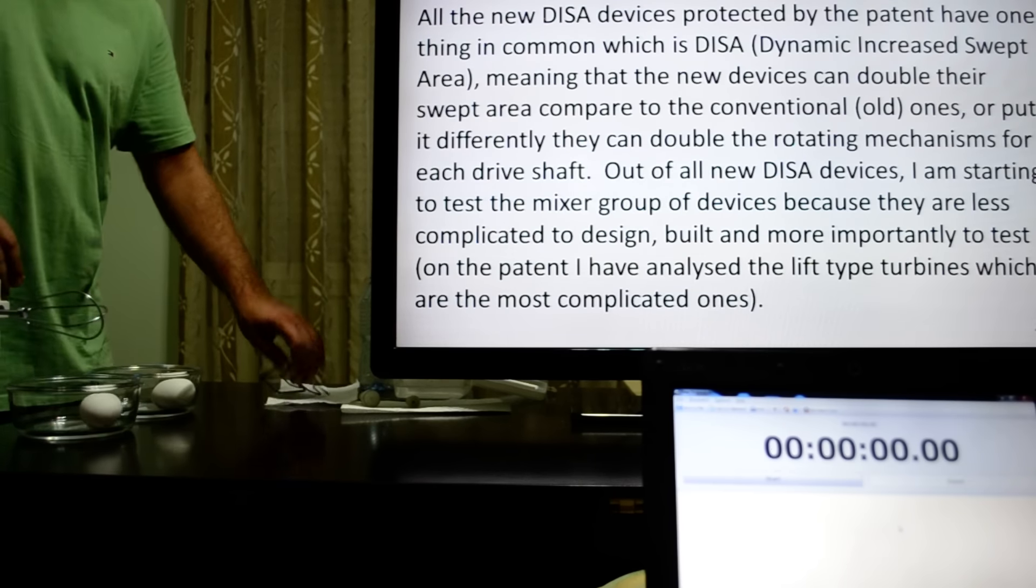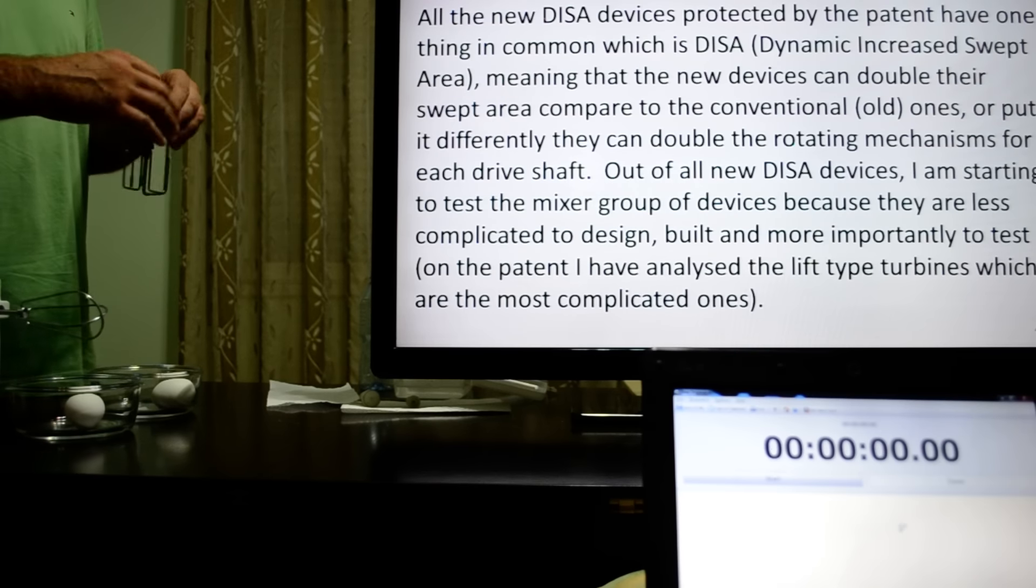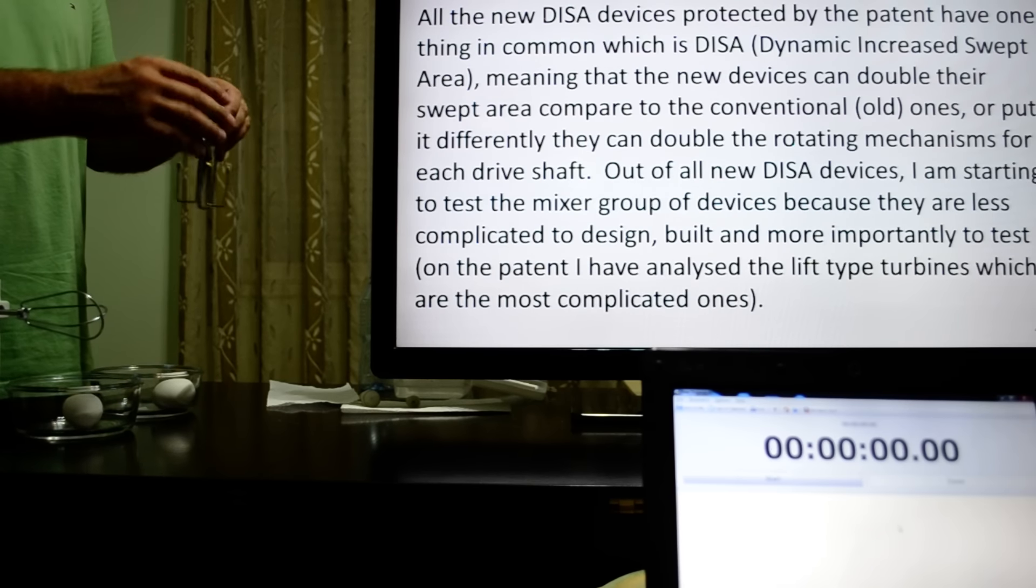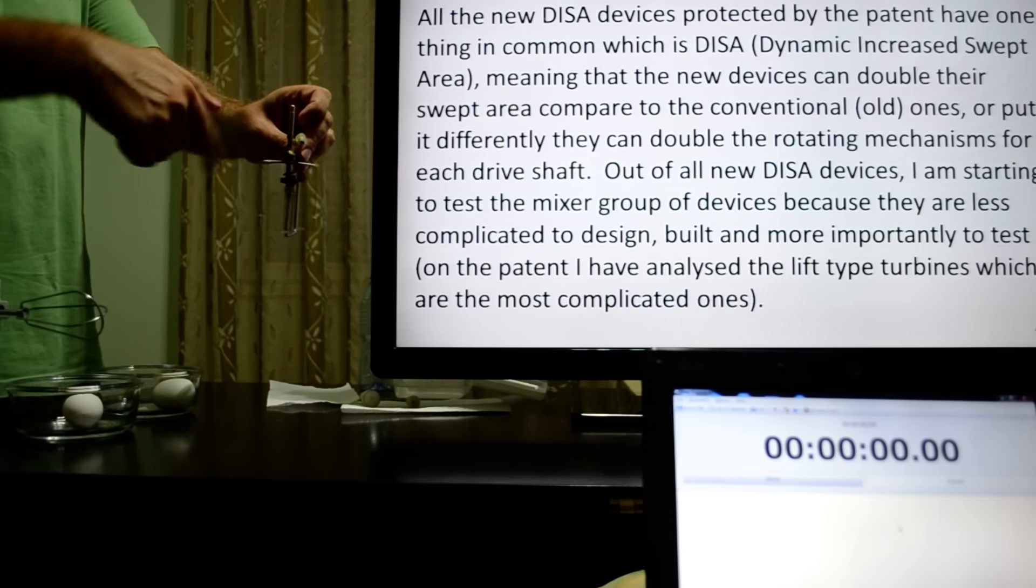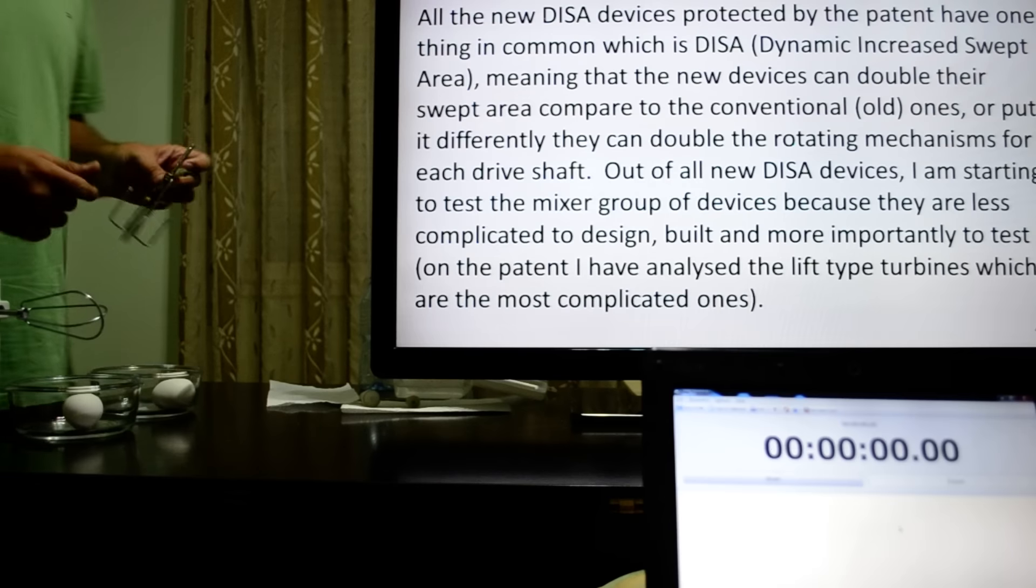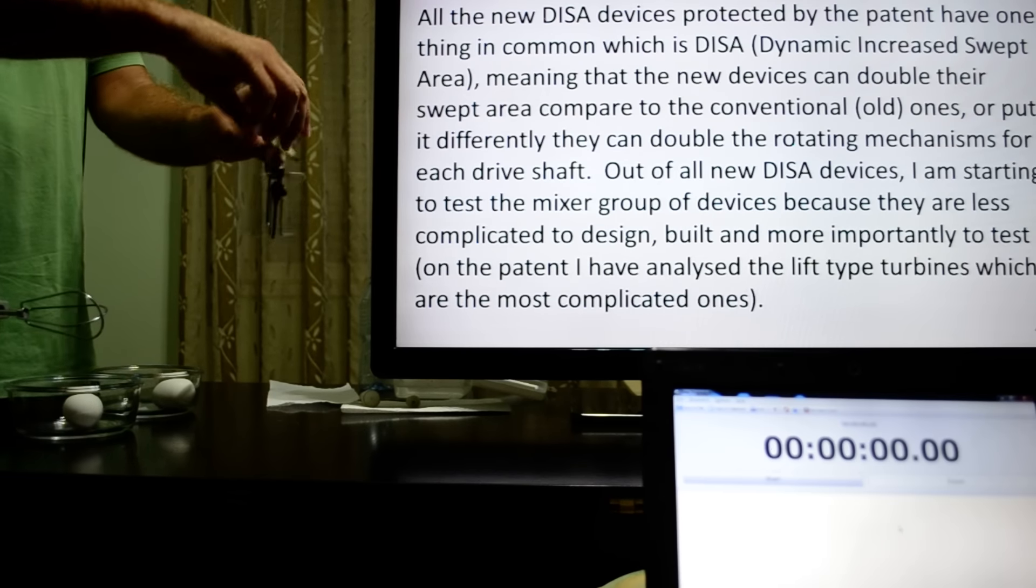All new DISA devices protected by the patent have one thing in common with DISA: dynamic increased swept area. That means the new device can double the swept area compared to the commercial ones, or put it differently, they can double the rotating mechanisms for each drive shaft.